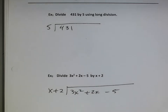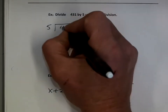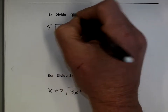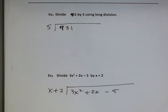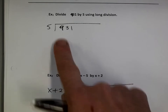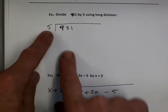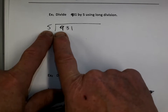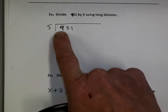I probably should have changed this problem. Let's make this a 9 — I'm going to change that to a 9. You guys okay changing that to a 9? I should have made that a 9. So how do we do it? You guys know how to do this one. You look at 5 and you say 5 goes into 9 how many times. So 5 goes into 9 one time.